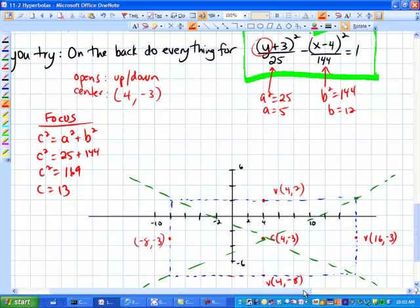Again, I picked nice easy numbers. Now since this thing opens up and down, I actually have to count 13 vertically. So I'm adding that to the y coordinate right here. So that's going to put me up here at 10, I believe, for my focus point. It's going to be 4, 10.